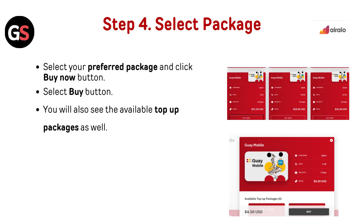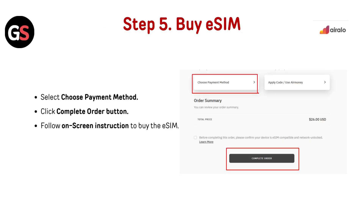Step 4 — Select Package: Select your preferred package and click the Buy Now button. You will also see available top-up packages. Step 5 — Buy eSIM: Select your payment method and click the Complete Order button, then follow the on-screen instructions to buy the eSIM.